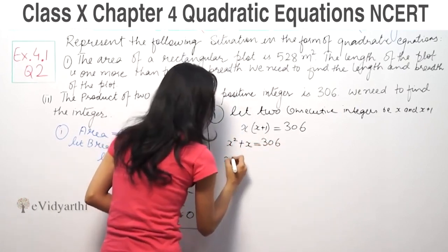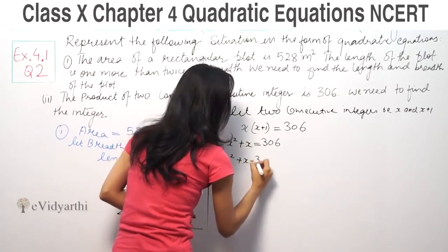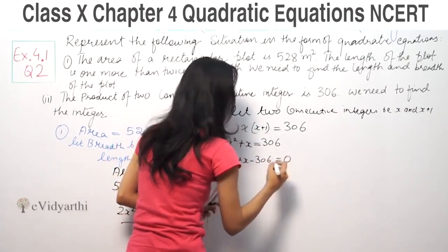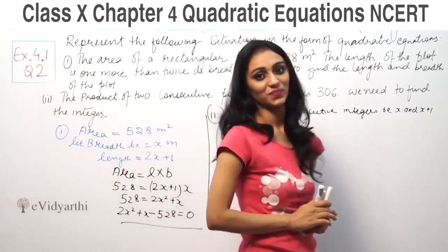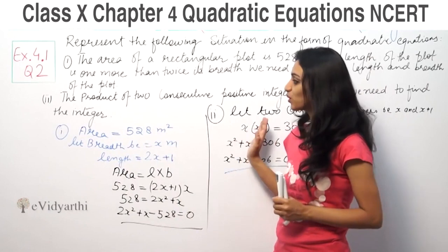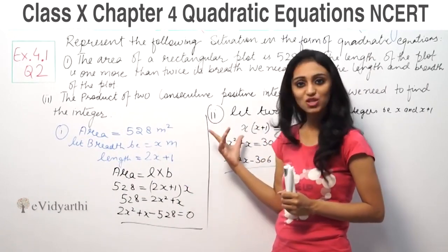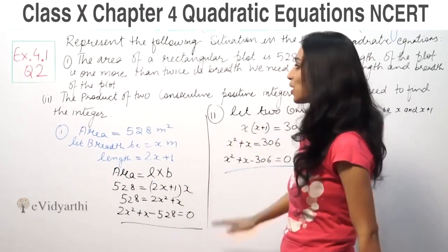Bringing 306 to this side, we get x square plus x minus 306 equals 0. This is our quadratic equation. As you can see, first we let the variables, then we put them in the equation.